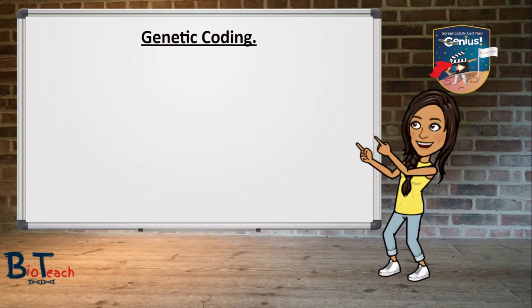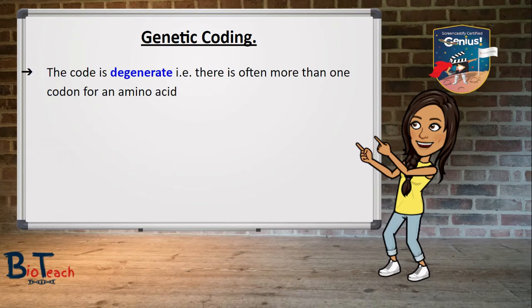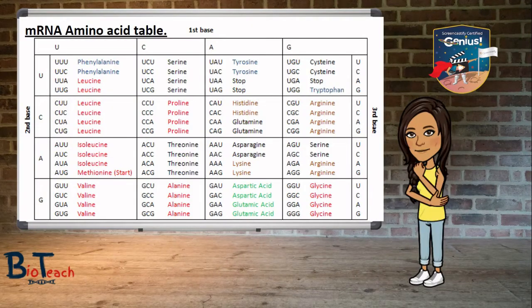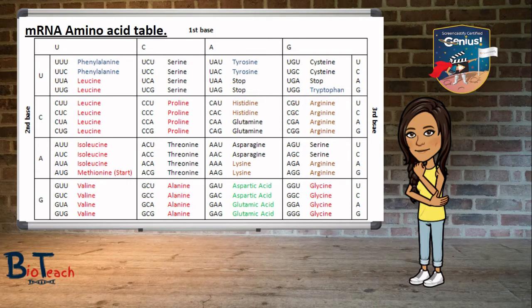There are a few important points to note about the genetic code. The first point is that the code is known as being degenerate, meaning there is often more than one codon for an amino acid. Looking at the mRNA amino acid table, you can see that leucine occurs at least six times — UUA, UUG, CUU, CUC, CUG all code for it. Similarly, at the bottom of that table, valine is coded for by four different codons: GUU, GUC, GUA, and GUG. Other examples include serine with about six codons and threonine with about four.